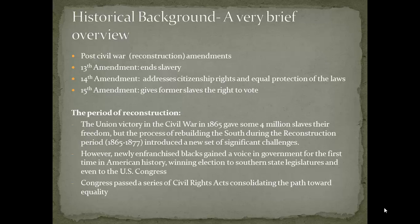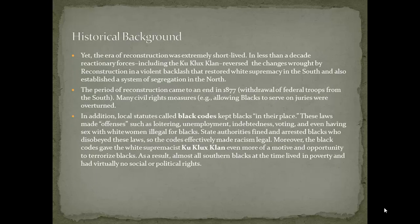Congress, during this period right after the Civil War, passed a series of Civil Rights Acts consolidating the path toward equality. What is probably the most remarkable about this era of Reconstruction is that it was so extremely short-lived. In less than a decade after the Civil War, reactionary forces including the KKK were successful in reversing the changes wrought by Reconstruction. We see a violent backlash that restored white supremacy in the South and also established a system of segregation in the North. The period of Reconstruction comes to an end in 1877, and many civil rights measures — such as allowing Blacks to serve on juries — were then immediately overturned.